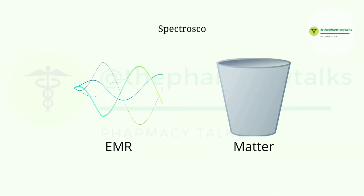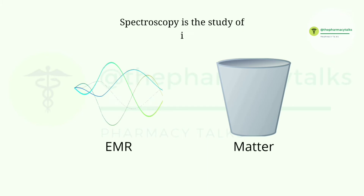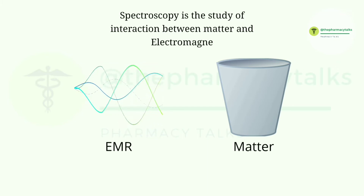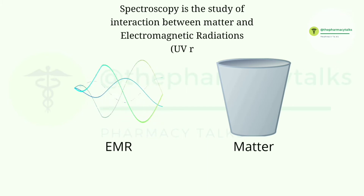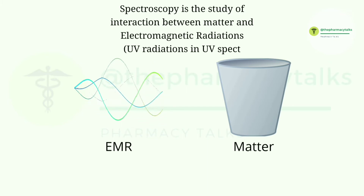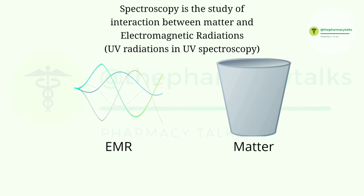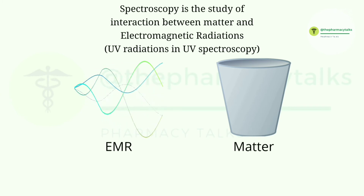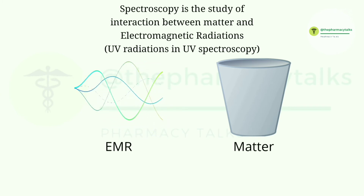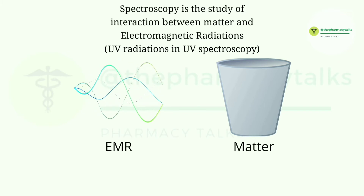Spectroscopy is the study of interaction between matter and electromagnetic radiations. And in UV spectroscopy, the electromagnetic radiation used is ultraviolet radiation.